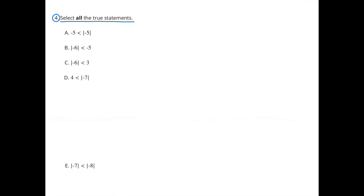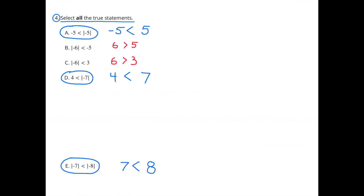Number 4: Select all the true statements. I selected A because negative 5 is less than the absolute value of negative 5, because the absolute value of negative 5 is 5. I selected D because 4 is less than the absolute value of negative 7, because the absolute value of negative 7 is 7. And I selected E because the absolute value of negative 7 is less than the absolute value of negative 8.